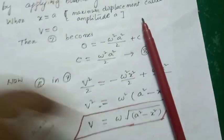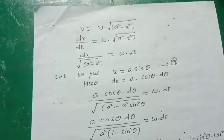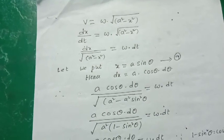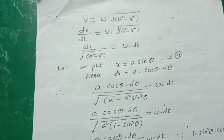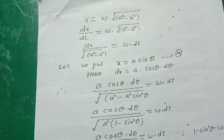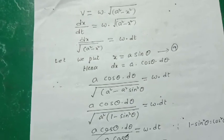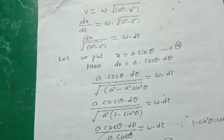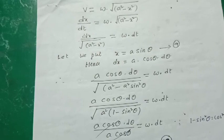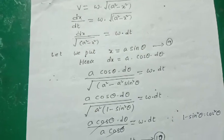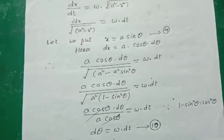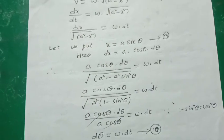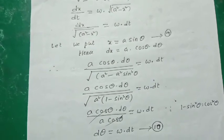Continuing the derivation: since v = dx/dt, we write dx/dt = ω√(a² − x²), which rearranges to dx/√(a² − x²) = ω dt. We substitute x = a sinθ (equation 9) — some textbooks use x = a cosθ, but here we use sine. Differentiating: dx = a cosθ dθ. Substituting into the equation: (a cosθ dθ)/√(a² − a²sin²θ) = ω dt.